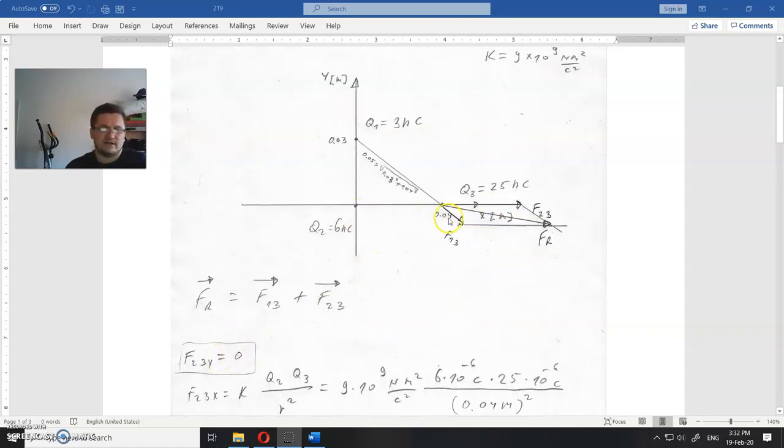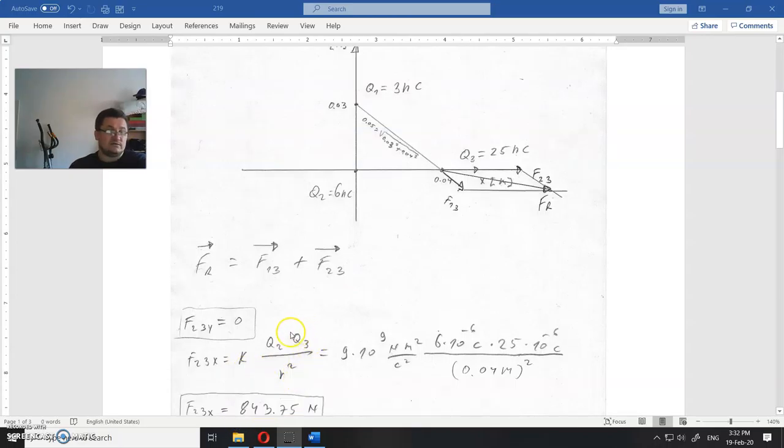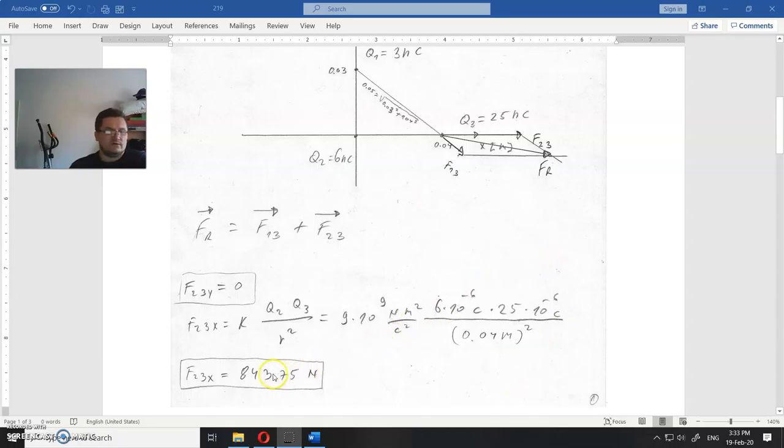As you can see, I first calculated the F2,3 force, and there is no y component of that force because both those electric charges lay on the x-axis. So F2,3 is just using this Coulomb equation. This is the Coulomb constant, this is Q2, this is the third electric charge, and this is the distance between them. So we calculated the x component to be 843.75 newtons, and the y component of that F2,3 force is zero.